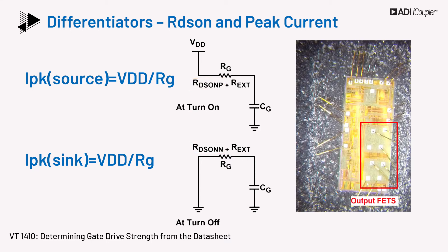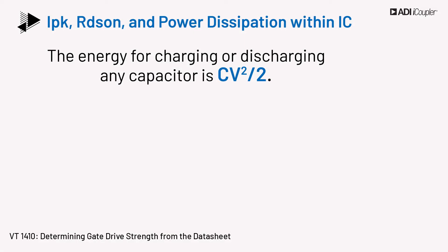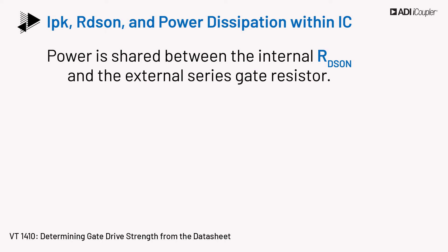Lower RDS-on has benefits almost across the board for gate drivers. The main trade-off is that lower RDS-on costs die area, since output FETs in a gate driver can be 10 to 30 percent of the total die area. Thus, ultimately there is a balancing act between drive strength and price. The energy for charging or discharging any capacitor is CV² / 2, and the way this energy is dissipated determines the thermal management of the driver.